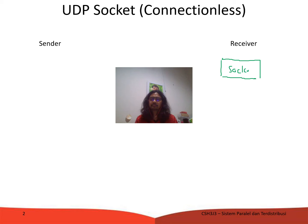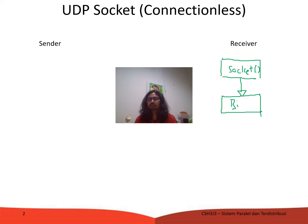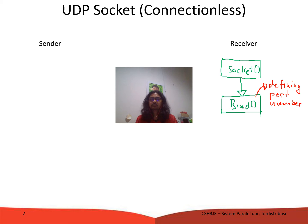The socket is created, and as mentioned in the previous video, the receiver needs to define the port number. This defining of the port number is called binding. Binding is defining the port number, so the sender knows which port to communicate with.